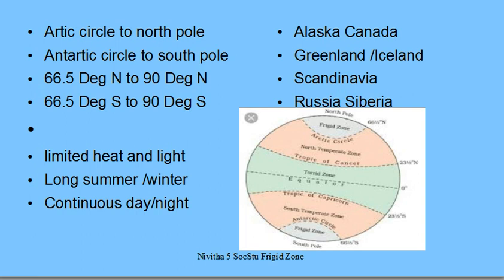The South Frigid Zone is fully covered by the continent called Antarctica — the white continent, the largest continent with no permanent living beings there. The human life there consists only of settlers, explorers, researchers, and expedition people. Very little permanent life is possible in the South Pole area, Antarctica.